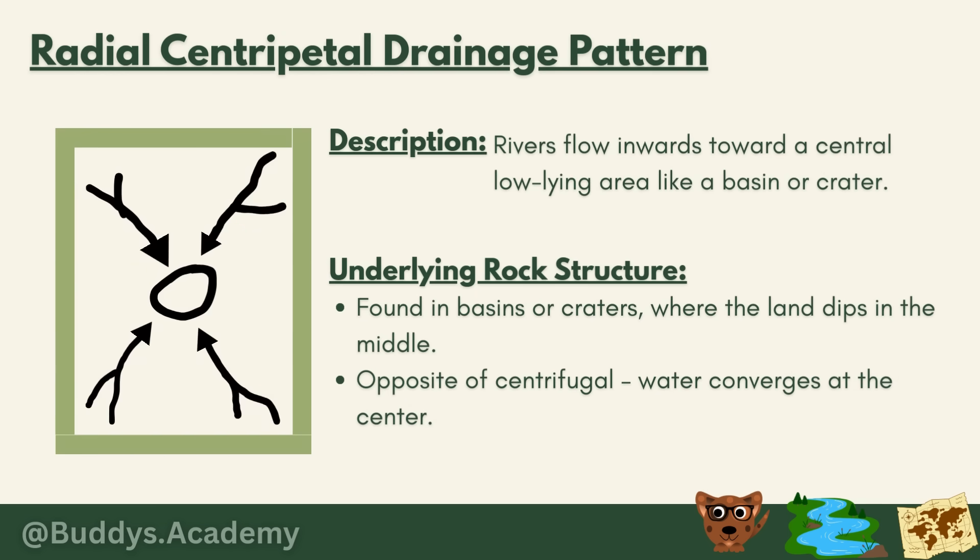The fourth is the radial centripetal drainage pattern, where rivers flow inwards towards a central low-lying area like a basin or crater — the exact opposite of centrifugal. With centrifugal, water flows away from a central high point; with centripetal, water converges towards a low-lying area in the middle. This pattern is found in basins or craters where the land dips in the middle, and is also associated with massive igneous rocks.